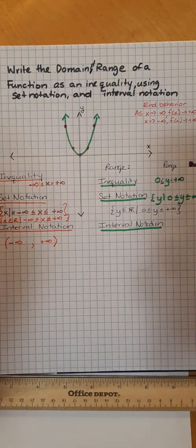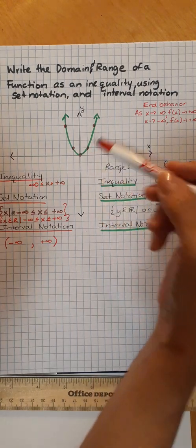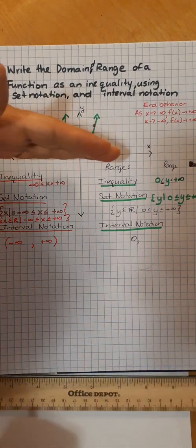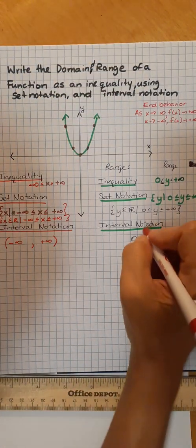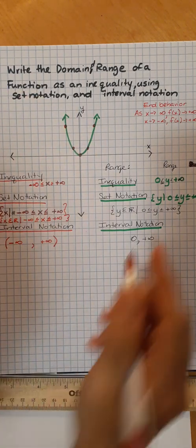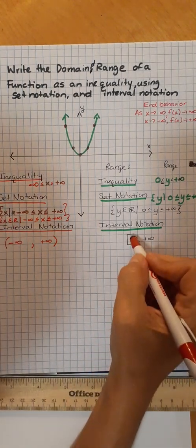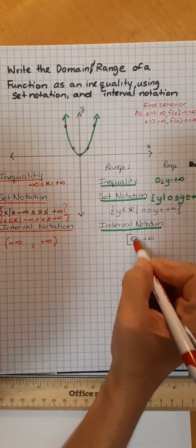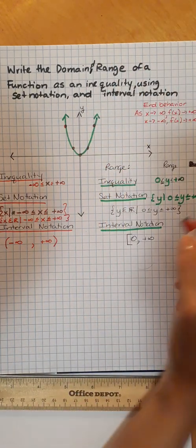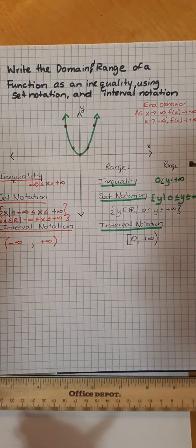What about interval notation? We're going to go where does it start — what's the lowest point? Zero. So I write a zero, comma. What's my highest point? There is no highest point, it's positive infinity. Does it go any below zero? No. So we have to show that — the way to show that is to enclose it with square brackets. And positive infinity keeps going on forever, so we show that with a parenthesis. So the interval notation for the range is [0, ∞).